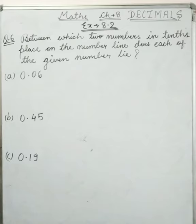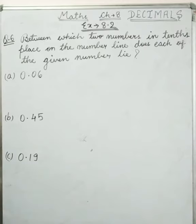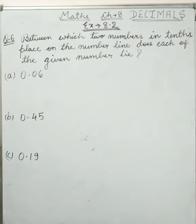Between which two numbers in the 10th place on the number line does each of the given numbers lie? Now we have to tell which number is in the 10th place. So how do we solve this?